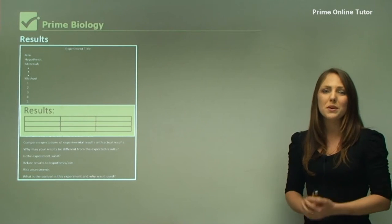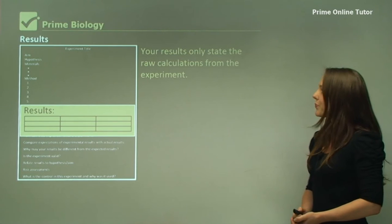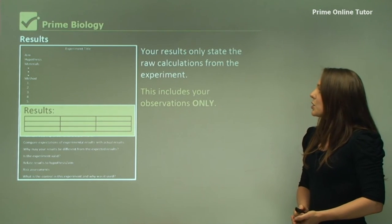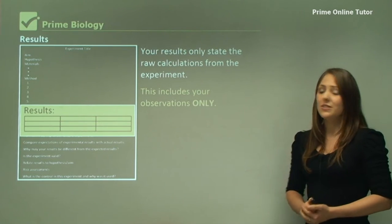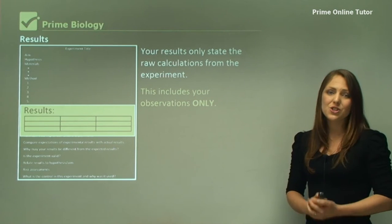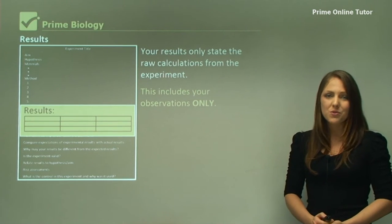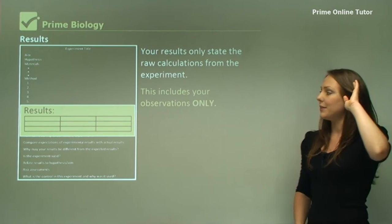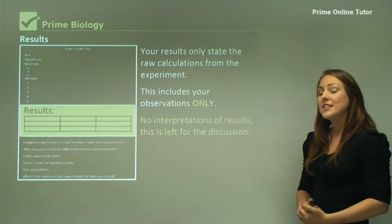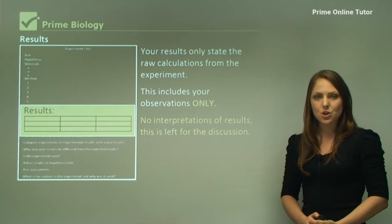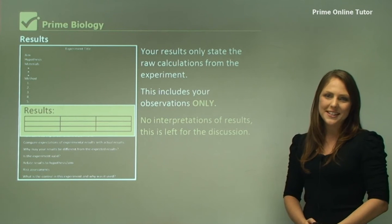Results should be written in a table where possible. This includes the raw calculations and your observations only. You do not put any other results from any past experiments here, so there's no interpretations in the results section. The interpretations are left for the discussion only.